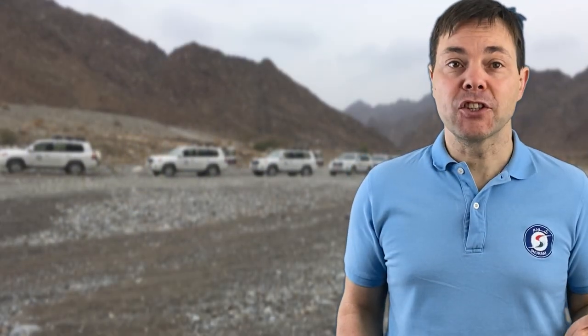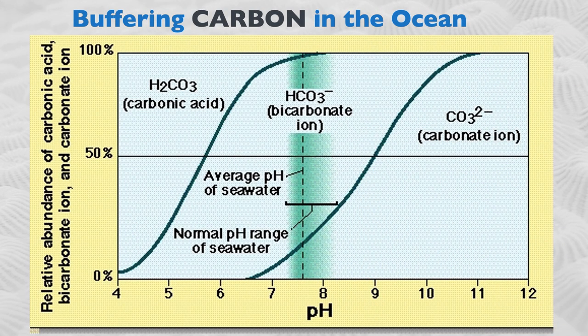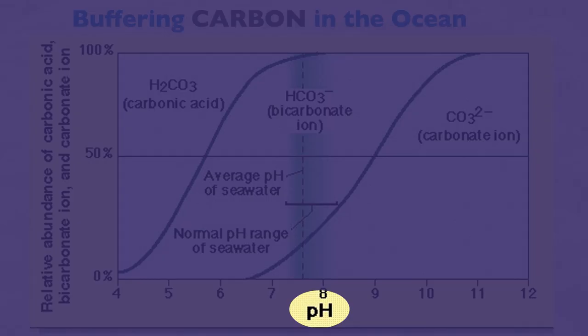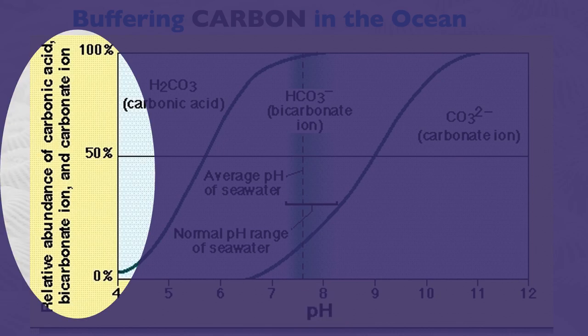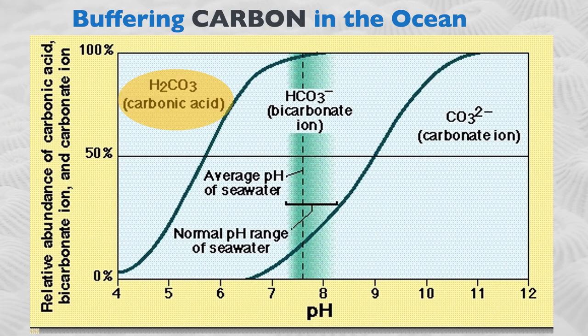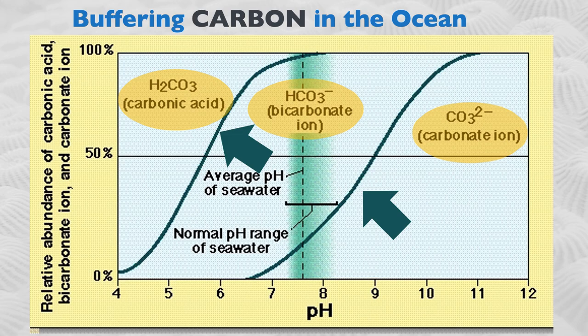In terms of pH, the chemistry of carbon in the ocean presents a relatively complex situation. On this plot, pH is shown on the horizontal axis, and on the vertical axis is the relative proportion of the three species we've mentioned: carbonic acid, bicarbonate ion, and carbonate ion. You can see there are lines that separate these three species — demarcations between the different ions.